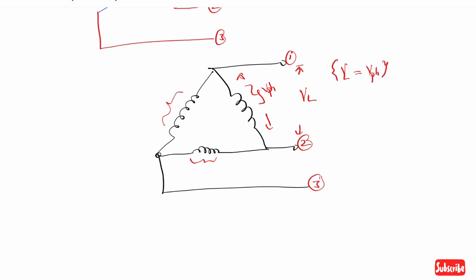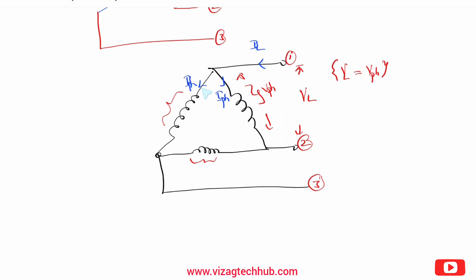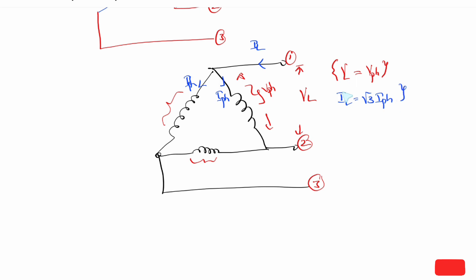Delta. Next, current flow. So, this is line current. If the line current reaches the end, it will divide in this phase, and it will also divide in this phase. So, if you look at the line current, it will be split into phase currents. Generally, line current is equal to root 3 times of phase current.